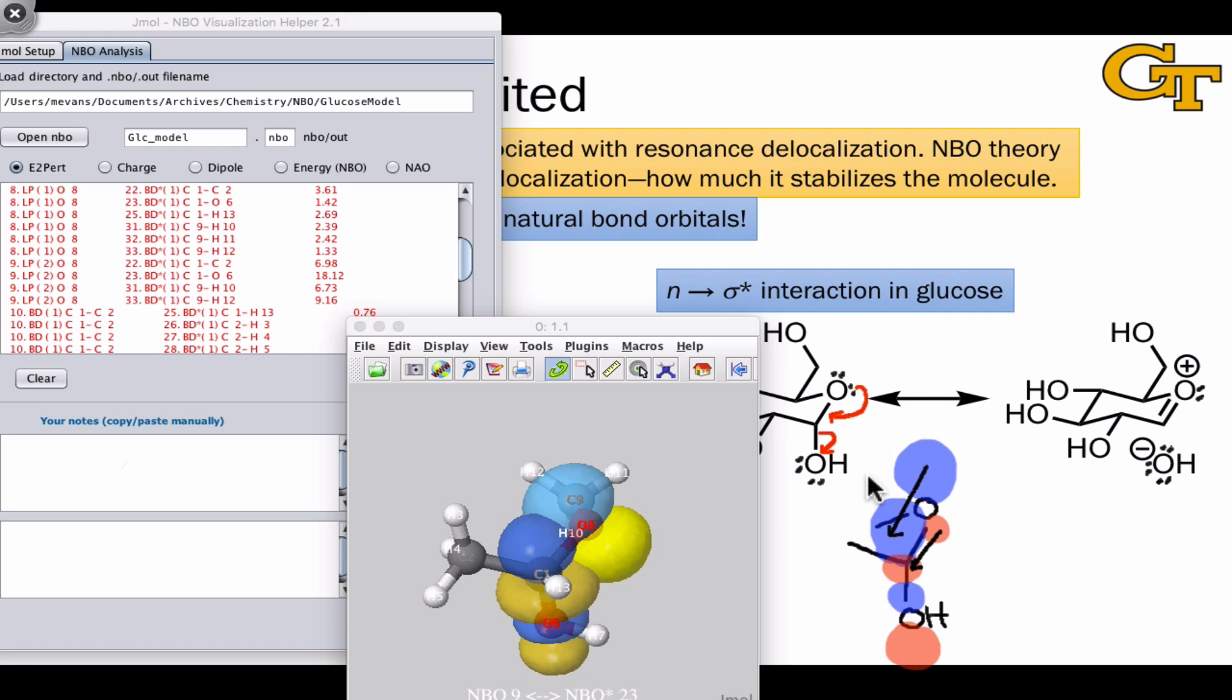So although these electron-pushing arrows are somewhat nontraditional, the resonance structure is valid and does have considerable importance in explaining the structure of this cyclic isomer of glucose.